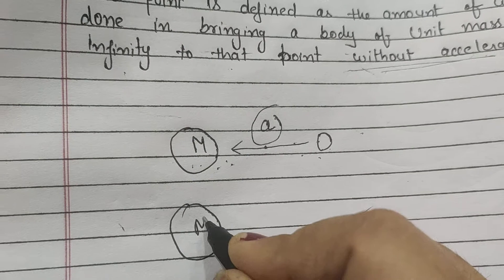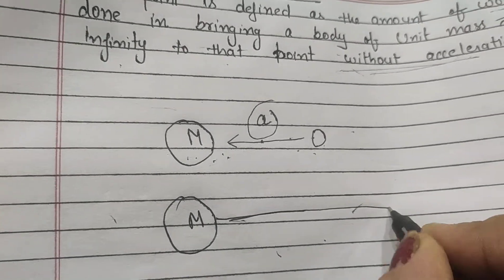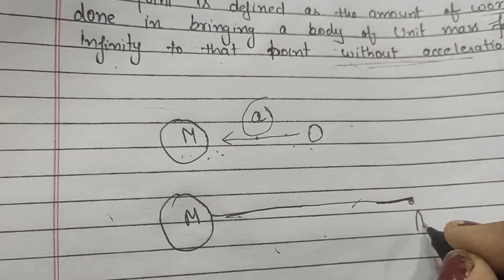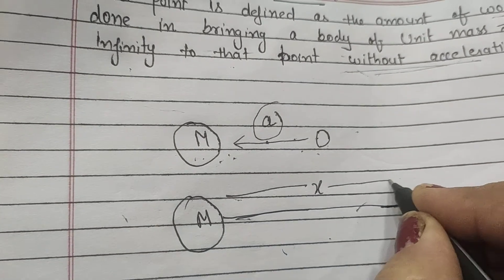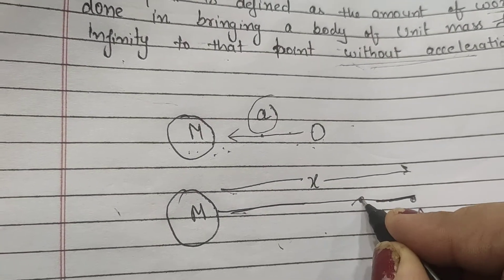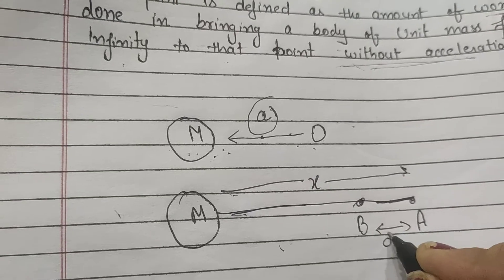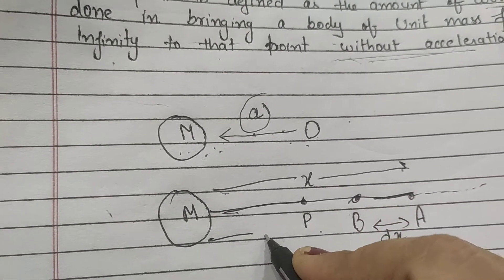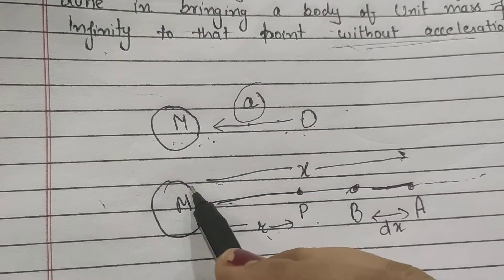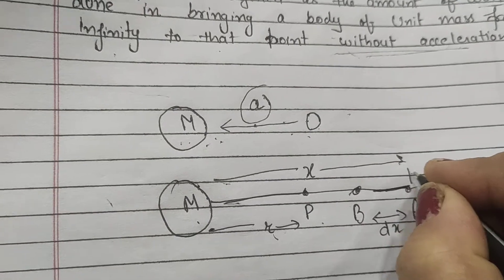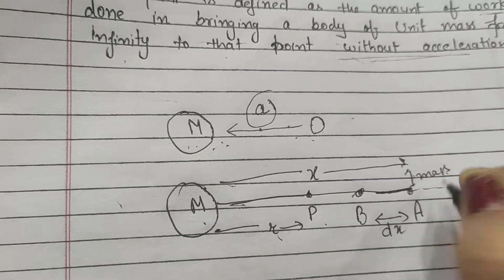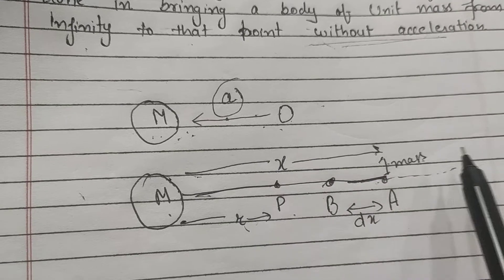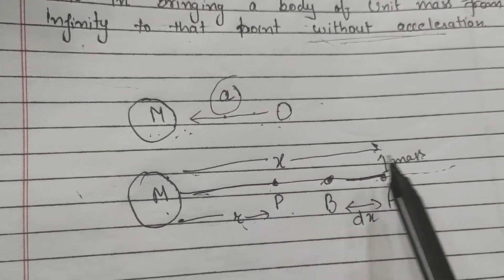Now let us take a look at the diagram. A body of mass M is kept here. Suppose this is point A at a distance x, and we have to bring the body to point B through a small distance dx. This is infinity on one side. The point we have to bring the body to is point P, which is at a distance r. We have a unit mass — that is, mass equal to 1 — being brought from infinity to point P. So our limit of integration will be from infinity to r.